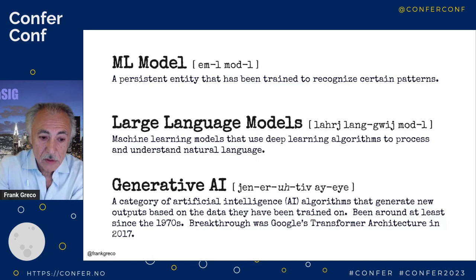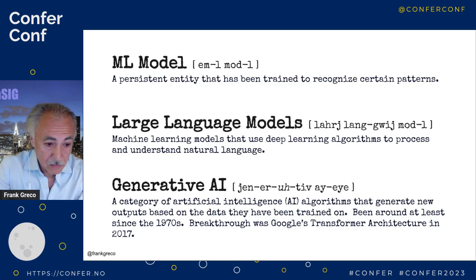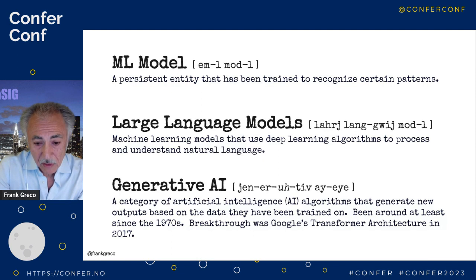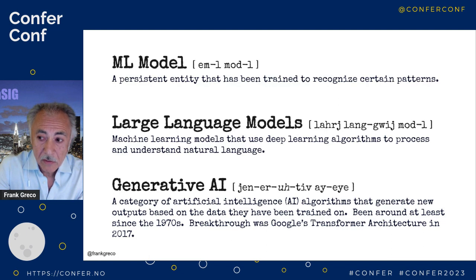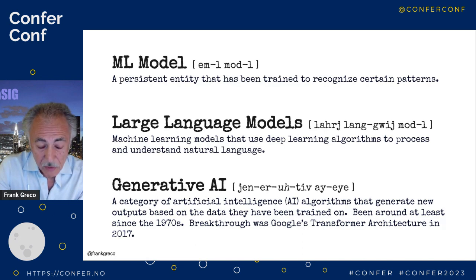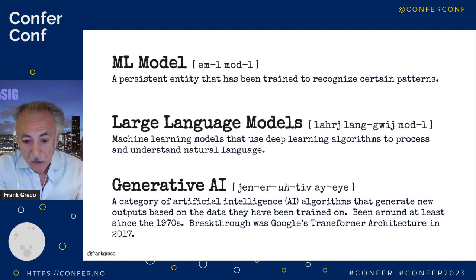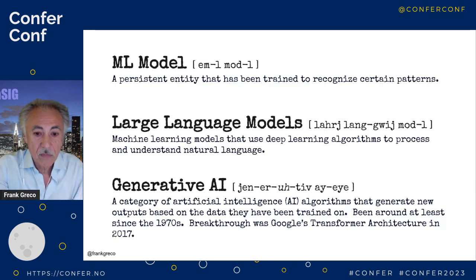Generative AI has been around since at least the late seventies, but the big breakthrough was in 2017 when Google's ML team came up with a software architecture called the Transformer, which allowed parallelism and utilized vectors with GPUs. That was a huge advance. The 2017 paper had eight Google researchers — seven of whom left Google shortly after, probably realizing how big this was going to be. That's why everything after 2017 just blossomed: the whole machine learning thing took off.